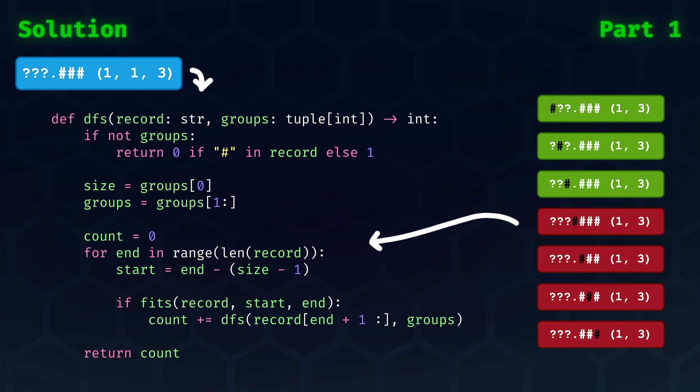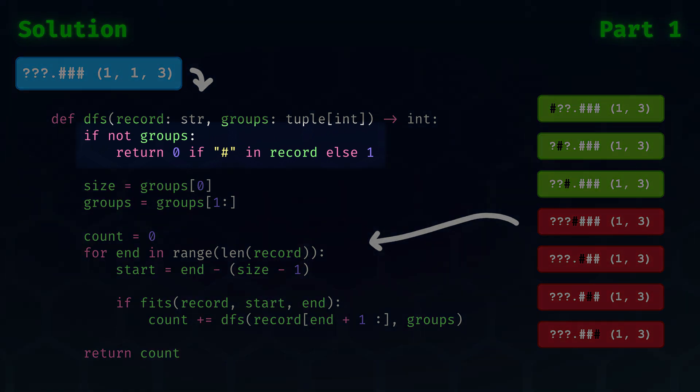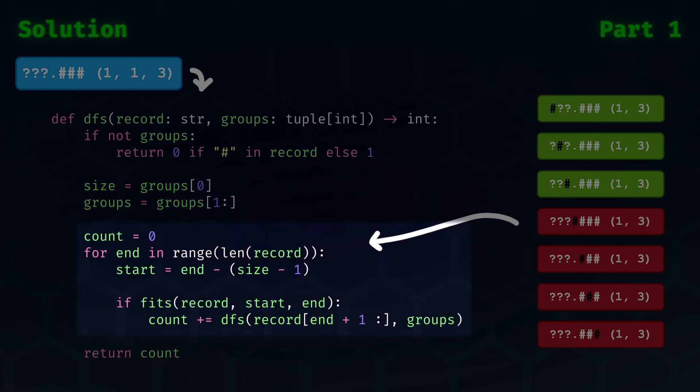The algorithm looks as follows. It takes in the state, which is the record as a string and the tuple of groups, and it returns the integer number of possible arrangements for any given sub-problem. Then, as is typical with these types of algorithms, we first have the trivial check to see if we are in an end state. In cases where we have no groups to check, then we must see if there are still hash signs left in the record. If there are, then the state which we check cannot be a solution, because all hash signs must map to some group. Assuming we are not in a trivial case, then we have to place another group in the record. The size of this group is the first element of the groups tuple. We can update groups to have it removed for the next recursion.